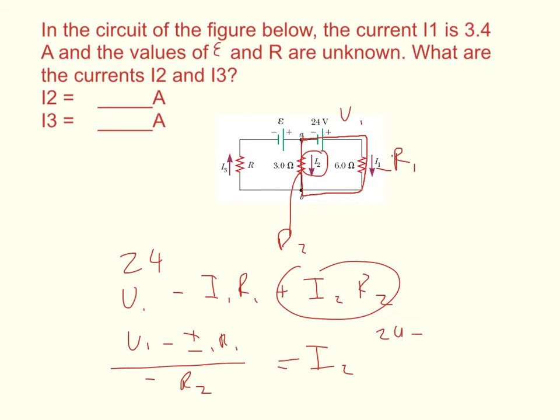When you plug the numbers in, you get 24 minus, now 3.4 times 6 is 20.4, and then you divide that by negative 3. So the number you should get is negative 1.2 amps.